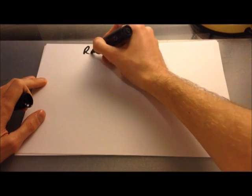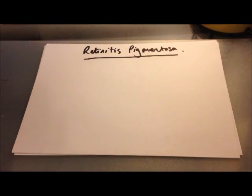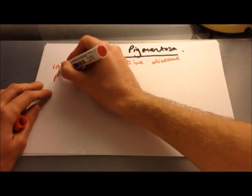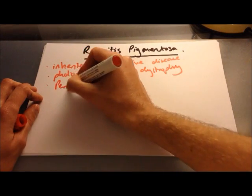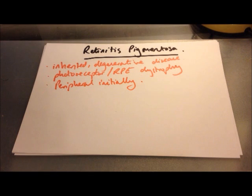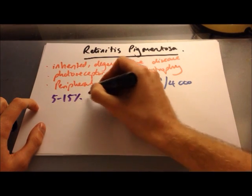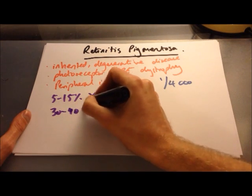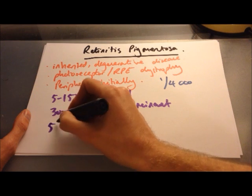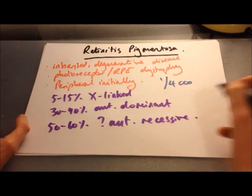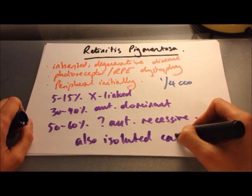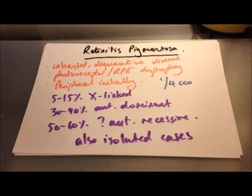The last condition is retinitis pigmentosa — an inherited and degenerative disease involving dystrophies of photoreceptors and the retinal pigment epithelium, initially affecting the peripheral retina and leading to ring scotomas and night vision disturbance. The prevalence is around 1 in 4,000. There are multiple genes that can cause the retinitis pigmentosa phenotype when mutated, with various inheritance patterns: 5–15% are X-linked and tend to be the most severe, with central vision lost by around age 30; 30–40% are autosomal dominant and tend to be milder with vision preserved until age 50–60; and 50–60% are presumed autosomal recessive.